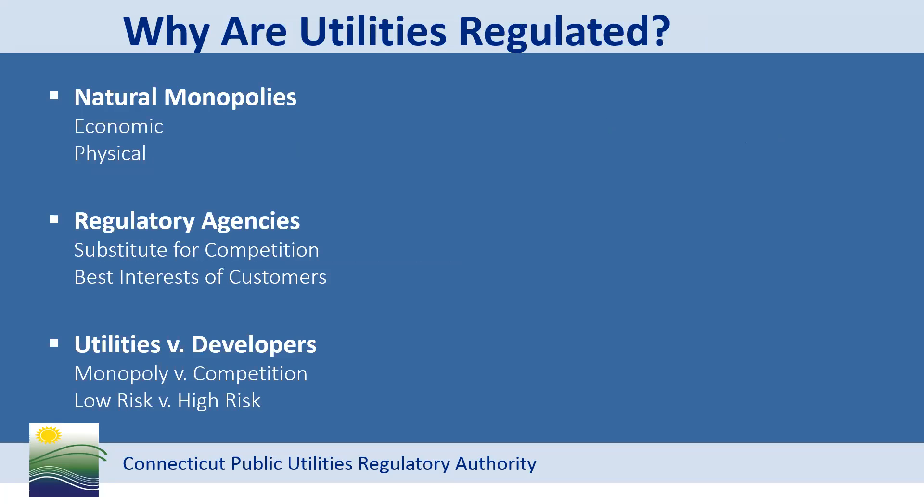Why are utilities regulated? Utilities are natural monopolies, both economic and physical. It would be inefficient and costly for multiple companies to construct multiple power lines, gas lines, water mains, etc. Monopolies are considered to be low risk, whereas businesses in a competitive market are considered high risk. Regulatory agencies are a substitute for competition — they determine what revenue is necessary to cover the cost of doing business, as well as what's fair and reasonable for both the company and rate payers.